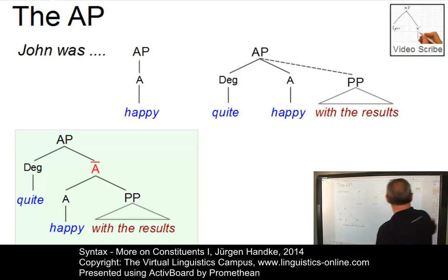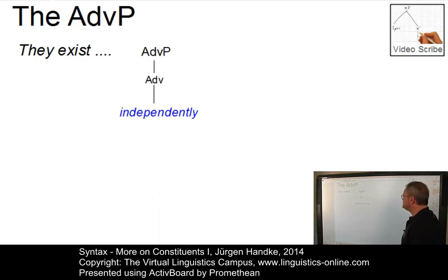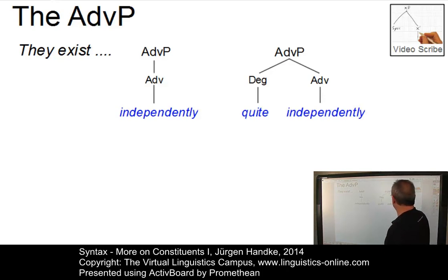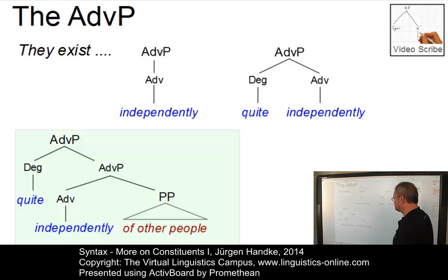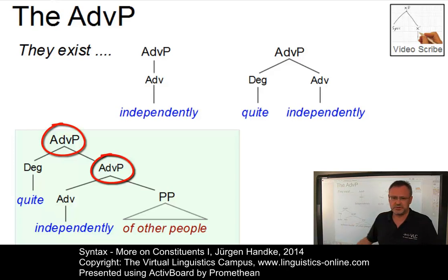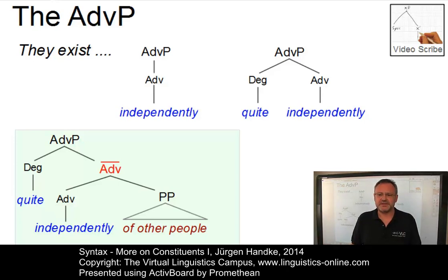Let's now look at adverbs, or more precisely, the adverb phrase, and you will see that the situation is very similar. Adverbs exist independently — here we have one adverb which is the head of an adverb phrase. And if we insert a degree adverb like 'quite,' then we have the adverb phrase with two branches: 'quite independently.' And if we want to add a prepositional phrase, we insert a new common mother node again — 'quite independently of other people' — with the PP represented as a triangle. So we have a structure similar to that of adjectival phrases, and again we have two phrasal nodes. By analogy with adjectival phrases, we call the internal node 'adverb bar,' giving us another intermediate level.